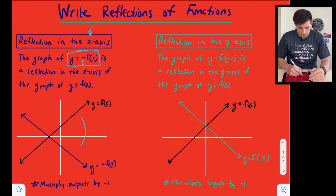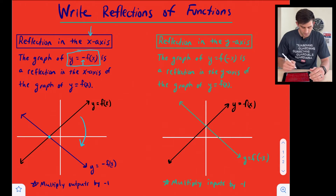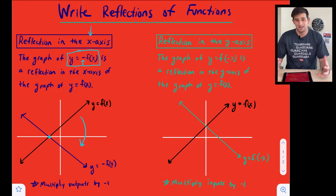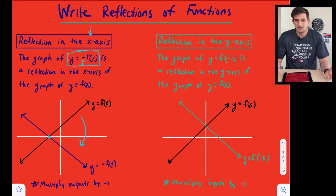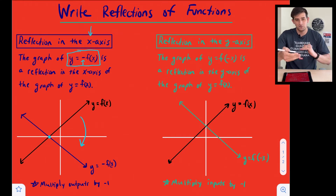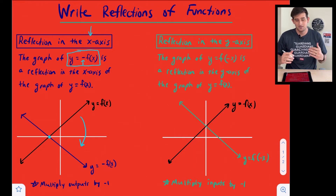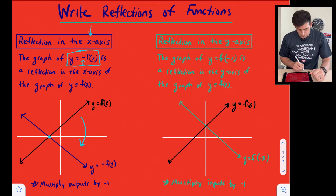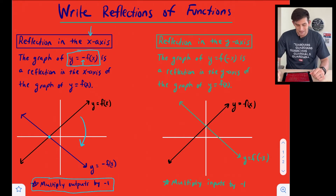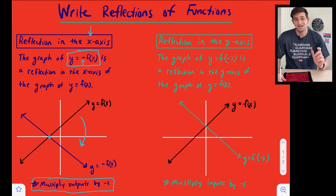In our diagram, y equals f of x — our original function — is graphed in black, and a reflection over the x-axis would look like this. The x-intercept stays the same because when we reflect over the x-axis that point reflects to itself and won't move. Think about folding a piece of paper where the crease of the fold is the x-axis — a point already there won't move. What we are doing is multiplying output values by negative one, which causes an x-axis reflection.